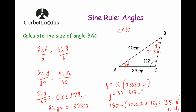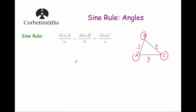So if you're using the sine rule to find the size of missing angles, I would recommend using this version of the formula. There is another video called the sine rule: the ambiguous case — it might be worthwhile watching that video as well after this one. And that's it.